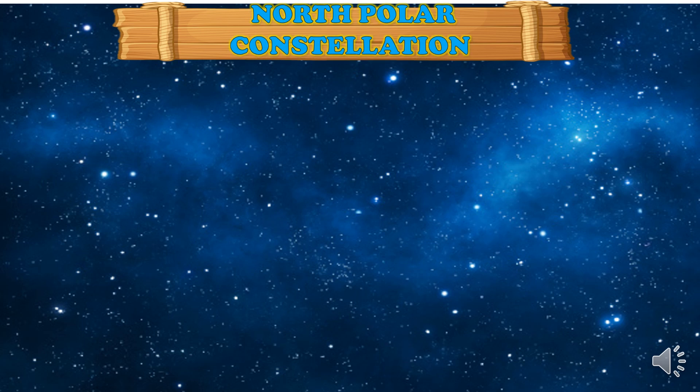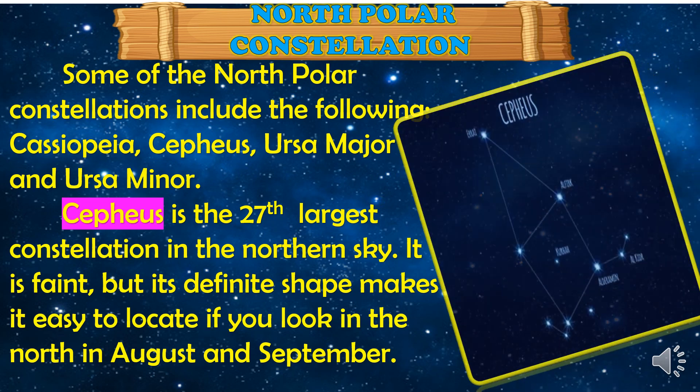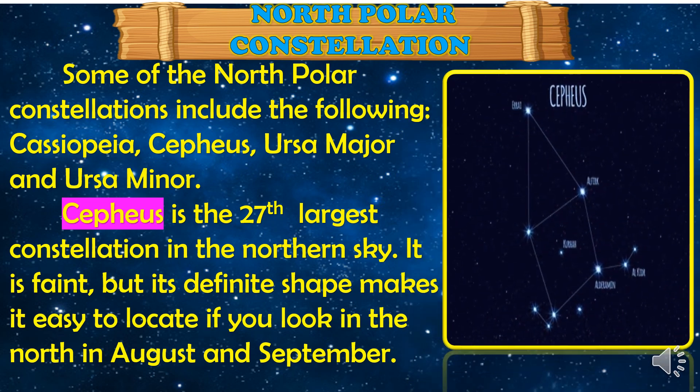We also have the North Polar constellations. Some of the North Polar constellations include Cassiopeia, Cepheus, Ursa Major, and Ursa Minor. Cepheus is the 27th largest constellation in the northern sky. It is faint, but its definite shape makes it easy to locate if you look north in August and September.